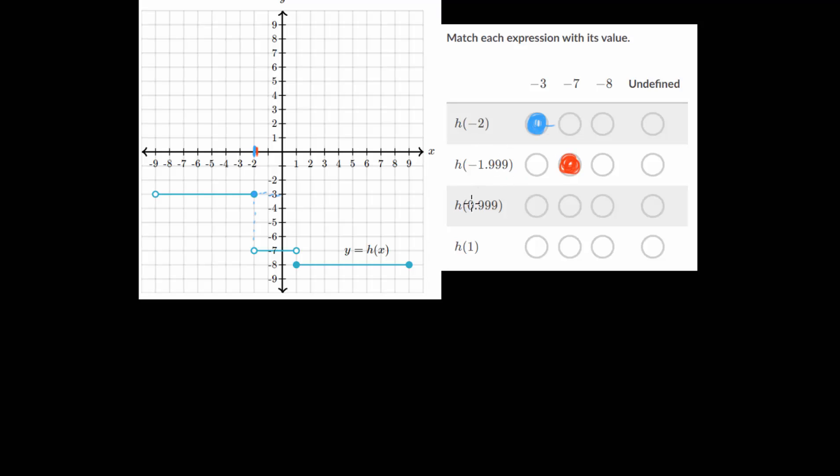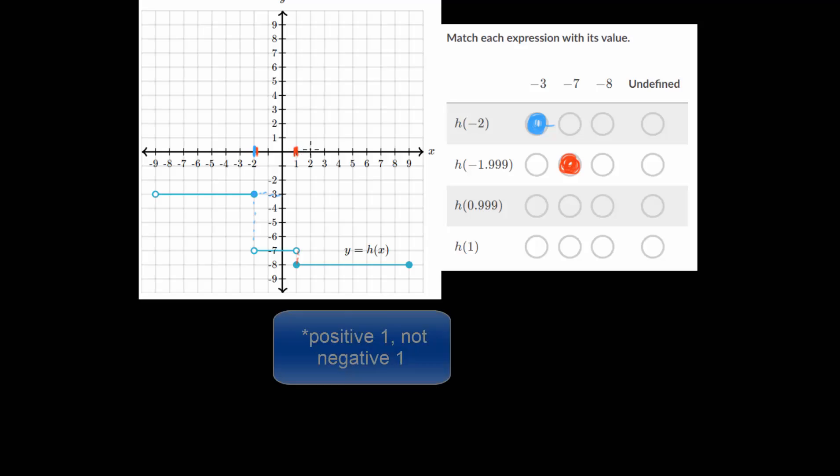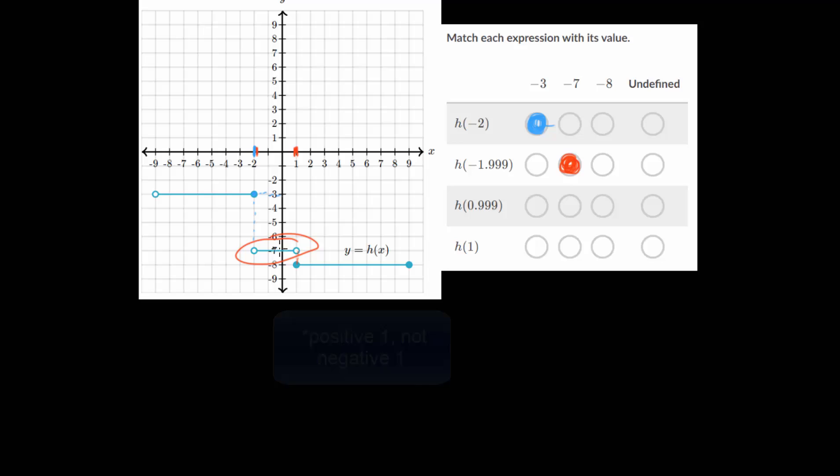And this one we have h of 0.999. So it looks like 1 is our border here. This top step does not include 1 and this bottom one does. But we're talking about a point just to the left of 1. And that would be this step of negative 7 for our y values. It's hard to draw these exactly since we're so close to that integer value, but slightly less than it. But regardless, this one is at negative 7.